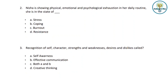Next question: Recognition of self, character, strength and weakness, desires and dislikes — what do we call all these things when a person can identify and recognize them? The answer is Self-Awareness. Option A is correct. It is not effective communication or creative thinking. Recognition of self, character, strength and weakness — all these things fall under self-awareness.